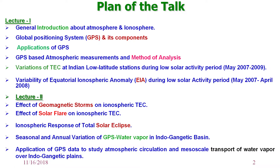This lecture is divided into two parts. In lecture one, I will discuss the introduction to the atmosphere and ionosphere, then go deeper into the Global Positioning System and its components, GPS applications, and how GPS is used for atmospheric measurements. We will discuss methods of analysis for GPS measurements and results showing variation of total electron content at Indian low latitude stations, and the variability of equatorial ionospheric anomaly (EIA) during low solar activity period.